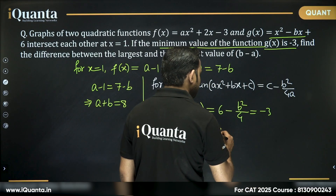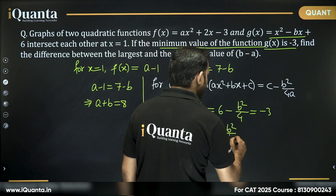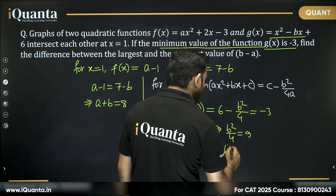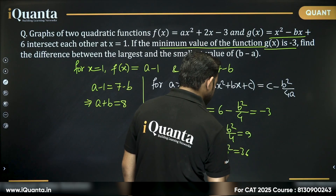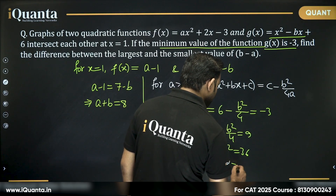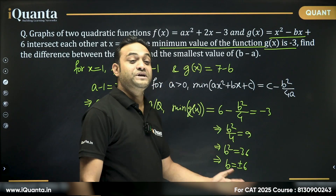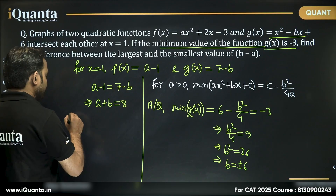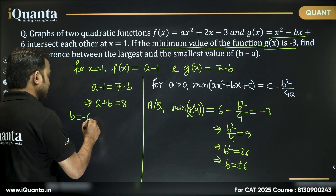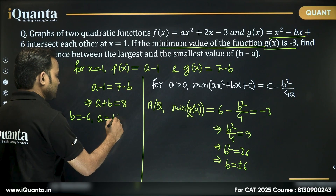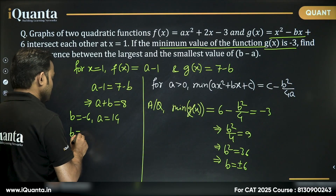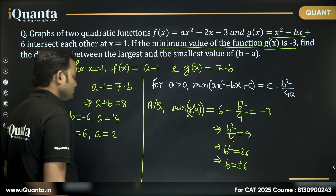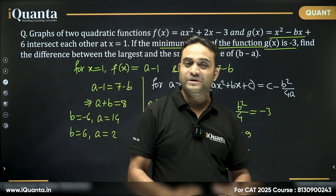From 6 - b²/4 = -3, we get b²/4 = 9, so b² = 36, meaning b = ±6. If b = -6, then a = 14. If b = +6, then a = 2. These are our two pairs of values for a and b.